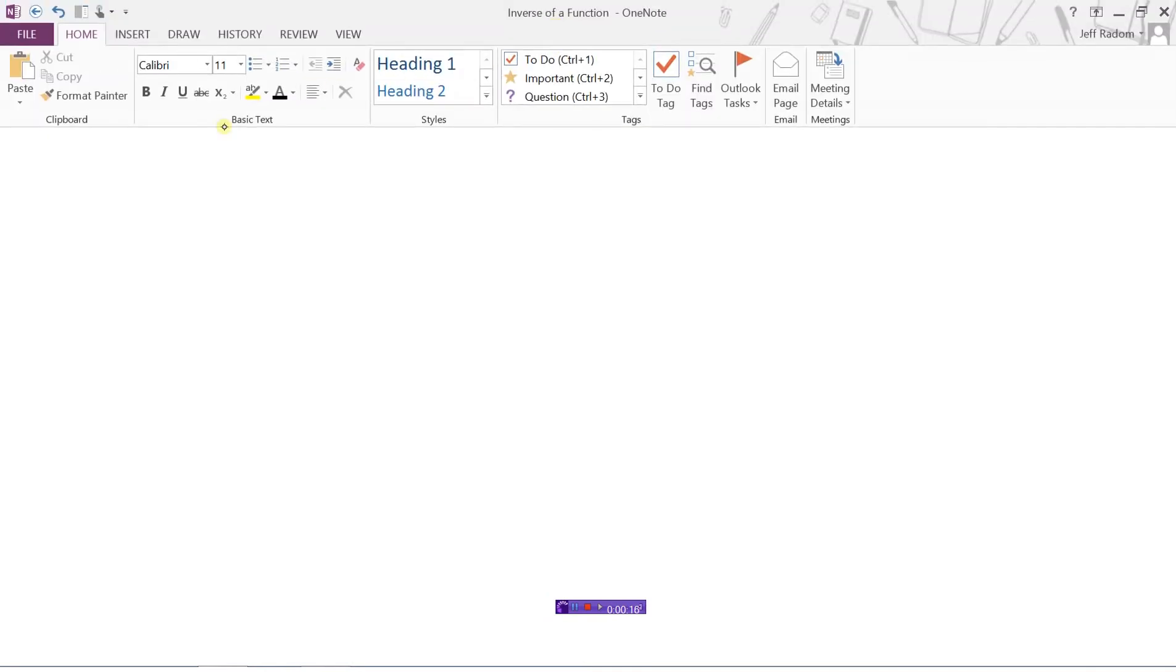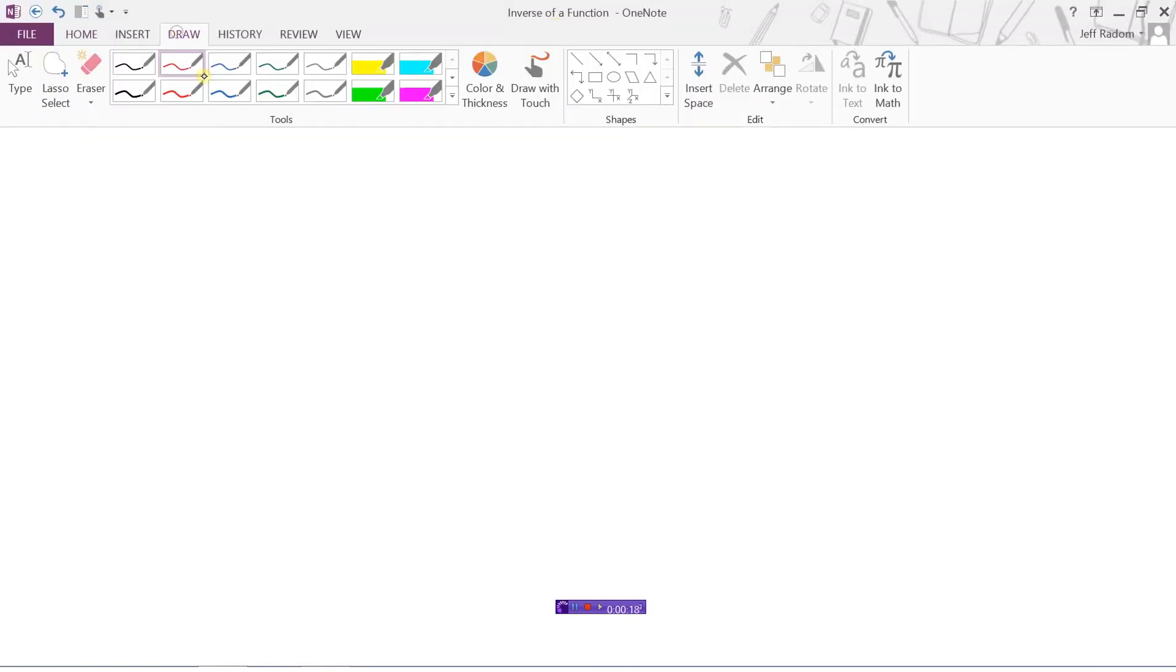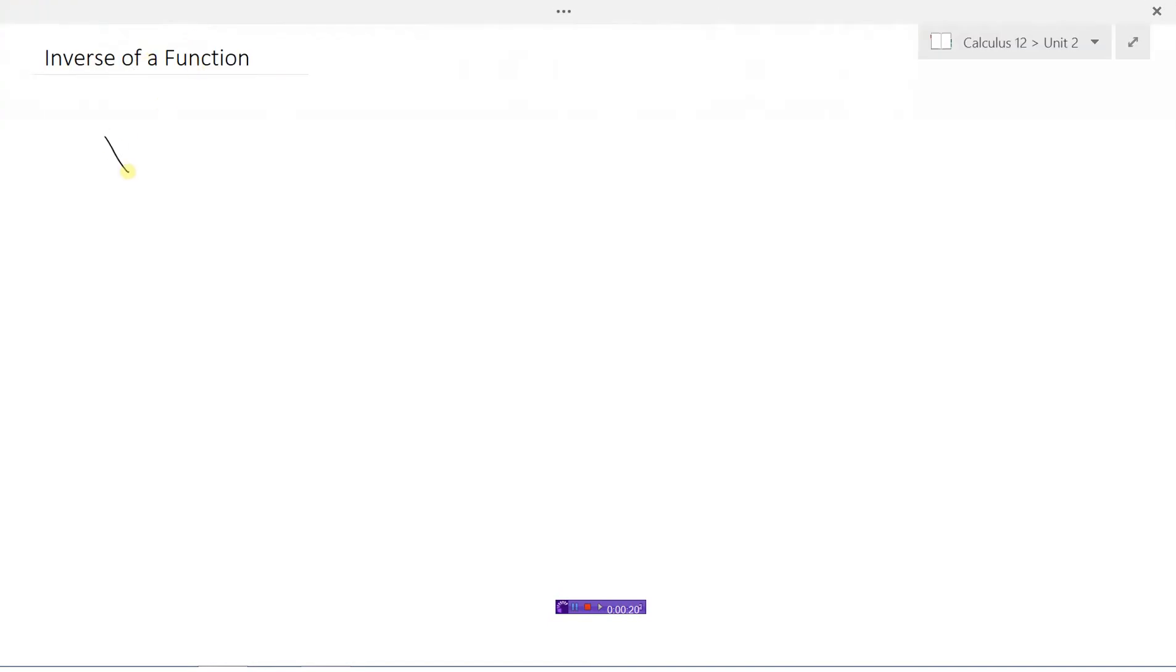We'll review what it means to determine the inverse of a function. Remember, an inverse happens when we take all of the x values and turn them into y values, and take all of the y values and turn them into x values. That's really what an inverse is: when x becomes y and y becomes x.